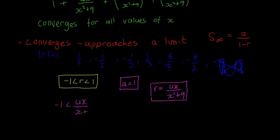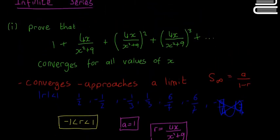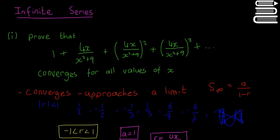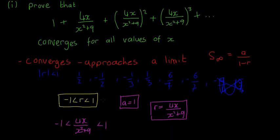So we have to prove that 4x/(x²+9) is both less than 1 and greater than -1. We need to do two separate proofs using inequalities. If we can prove this, the question is done — we don't even need to calculate the limit, just prove that r lies between -1 and 1.